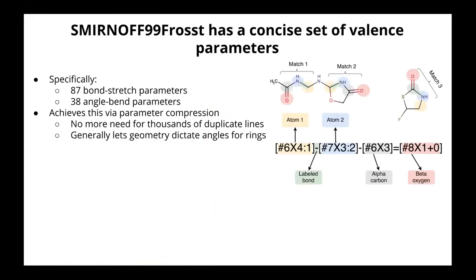Right now, where we stand in Smirnoff 99 Frost — our starting point small molecule force field — we have 87 bond stretch parameters that covers basically all the chemistry we cover, and just 38 angle bend parameters, which is quite small. And probably that's a little too small in some cases. I think for rings, we've relied on the geometry of the ring — the geometric constraints — to set its shape. So we have perhaps fewer angle parameters than we might end up needing.